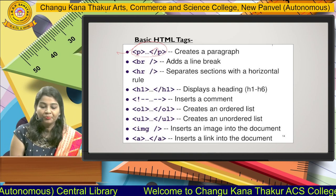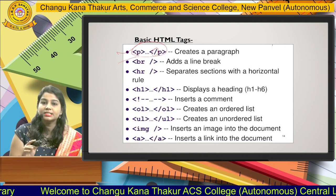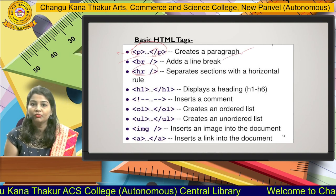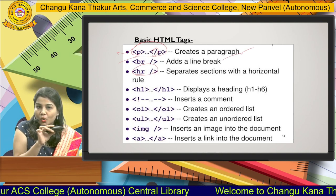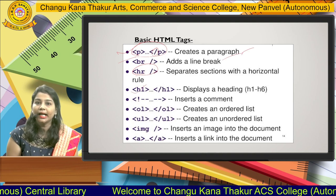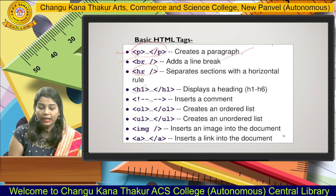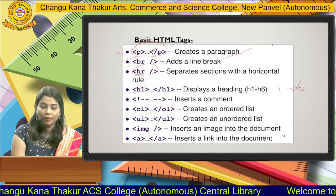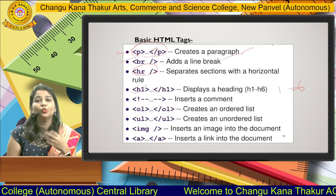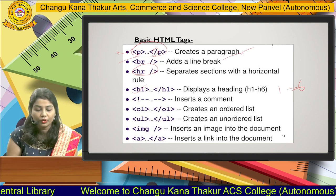Next is the BR tag. The BR tag is used to move content to the next line — that is a line break. Next is the HR tag, which stands for horizontal rule. If you want to make a horizontal line on the web page, you use the HR tag. Next is the heading tag, which works like font size — how large you want the font displayed on the web page. It ranges from H1 to H6. Next is the comment tag — if you want to include content in your code but not display it on the web page, it is just for developer purposes, so you use the comment tag.